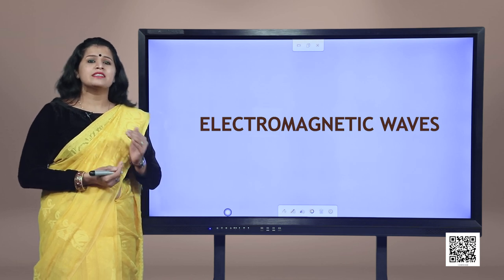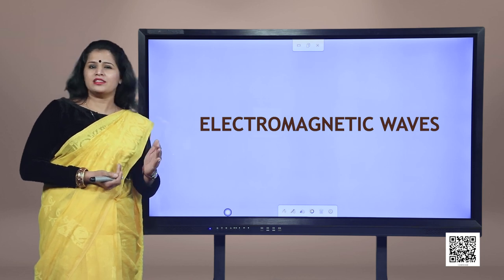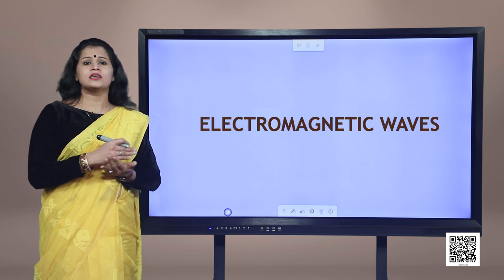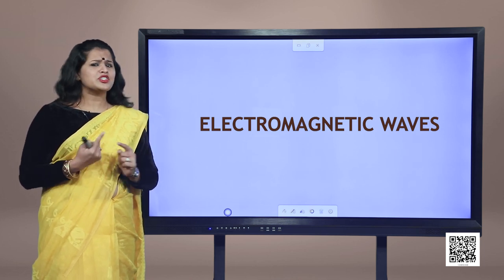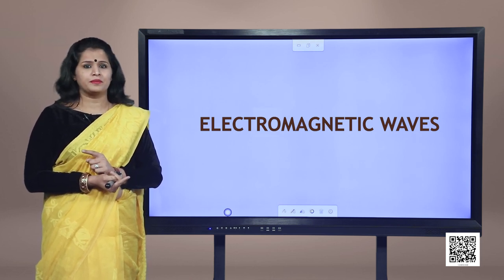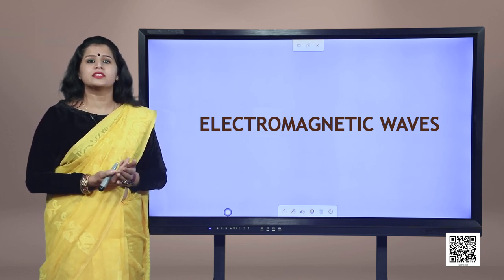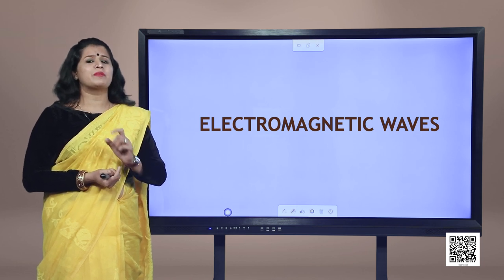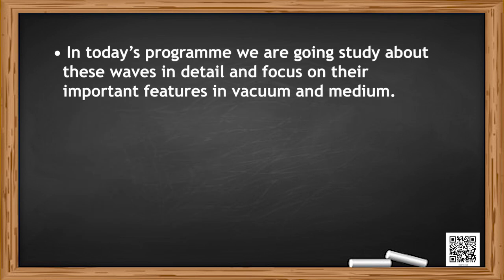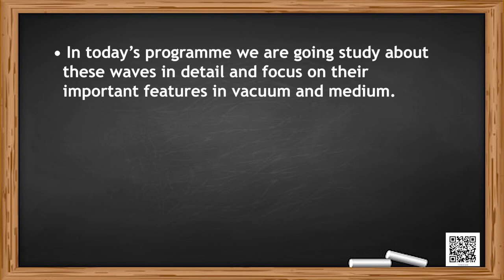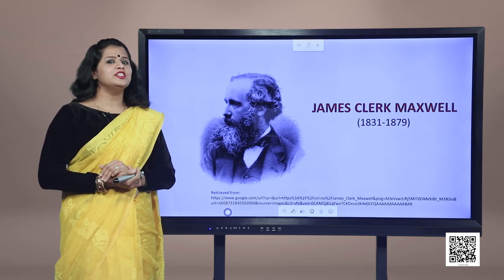We have already seen that a magnetic field changing with time gives rise to an electric field. But since symmetry is so powerful in physics, you should be asking whether this induction can occur in the opposite sense also — can a changing electric field produce a magnetic field? The answer is yes. This was well answered by James Clerk Maxwell, who also rectified the inconsistency in Ampere's circuital law by adding an extra term called displacement current. In today's program, we will study these waves in detail and focus on important features in vacuum and medium.